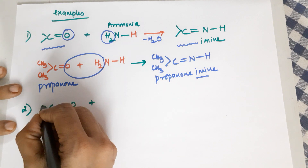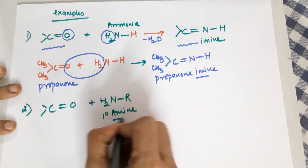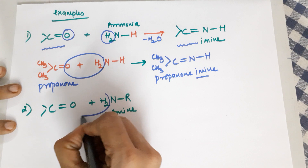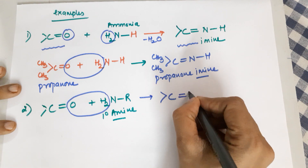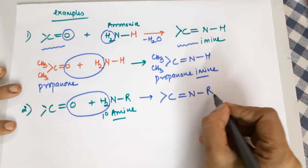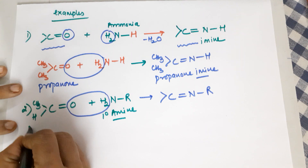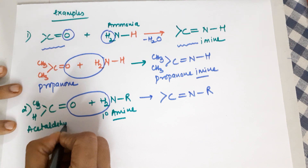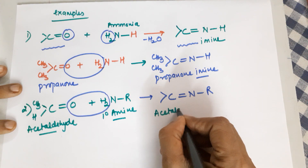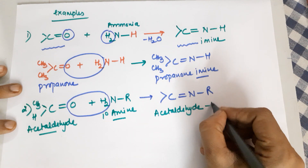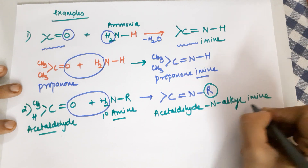Moving on to the second example: your starting material is an aldehyde or ketone, and your ammonia derivative is a primary amine. You can only use a primary amine because you require two hydrogens to combine with oxygen to form the water that is lost. The product is C=N-R, where R is the alkyl group. For example, if the starting material is acetaldehyde (ethanal), the product would be ethanal N-alkyl imine.